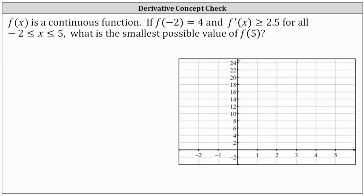F of x is a continuous function. If f of negative 2 equals 4 and f prime of x is greater than or equal to 2.5 for all values of x in the closed interval from negative 2 to positive 5, what is the smallest possible value of f of 5?